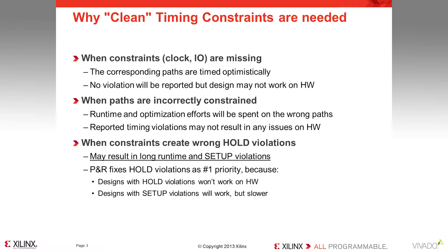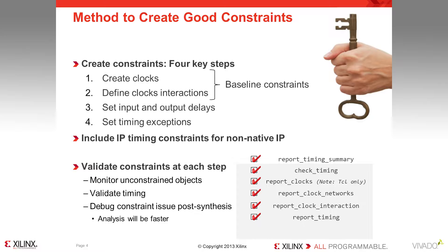This design methodology will guide you to create clean timing constraints. Follow these four simple steps. First, ensure that all the clocks are correctly constrained. Refer to the QuickTake video on creating clock constraints. Second, now that the clocks are all constrained, examine their relationships and ensure that CDC paths are safe, and either add clock group constraints or set max delay data path only constraints.